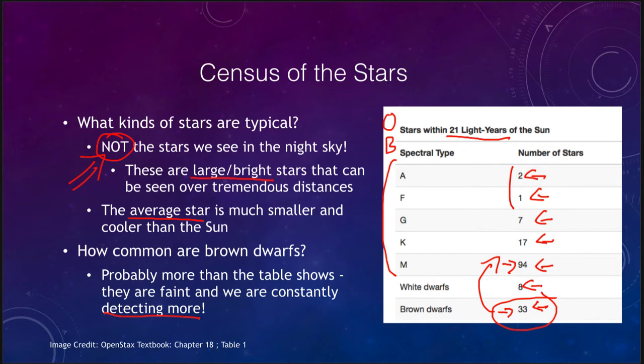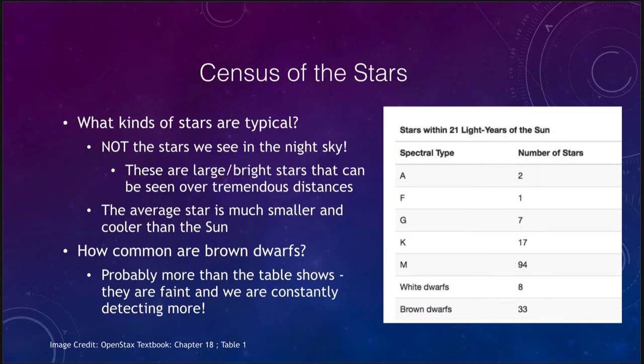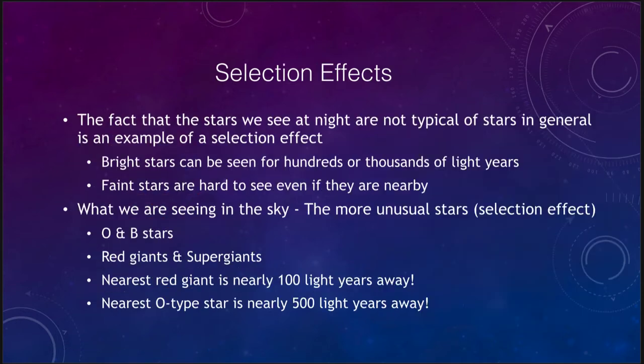Now why do we see when we look out at the sky all of these bright stars, but they are not typical? This is the example of what we call a selection effect. Typically what it means in astronomy, bright stars can be seen even if they are hundreds or thousands of light years away. Faint stars at the same distance would be almost invisible.